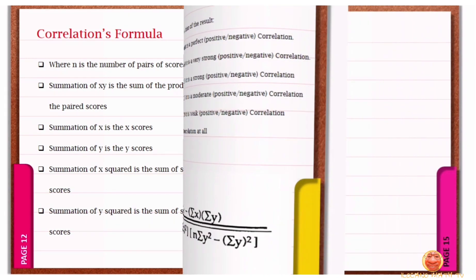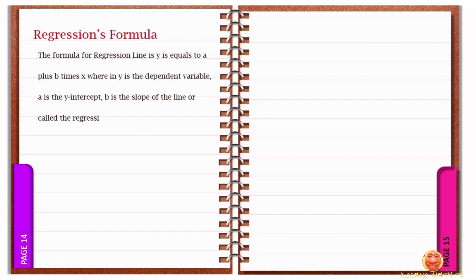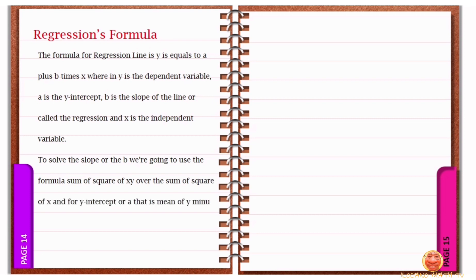And here is the formula of regression. The formula for regression line is y equals a plus b times x, where y is the dependent variable, a is the y-intercept, b is the slope of the line or called the regression, and x is the independent variable. To solve the slope, or the b, we're going to use the formula sum of square of x,y over the sum of square of x, and for y-intercept, or a, that is mean of y minus b times the mean of x.